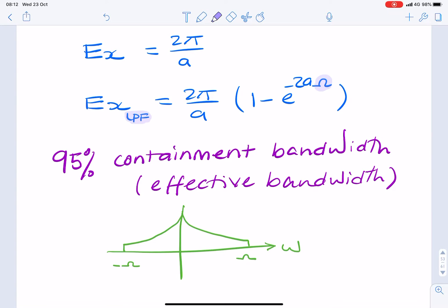So the question is, what is that value of omega for which the energy contained within this bandwidth will be 95% of the total energy? What's the value of omega that will retain 95% of the total energy?